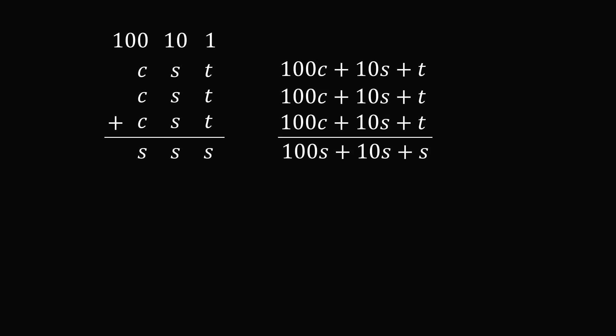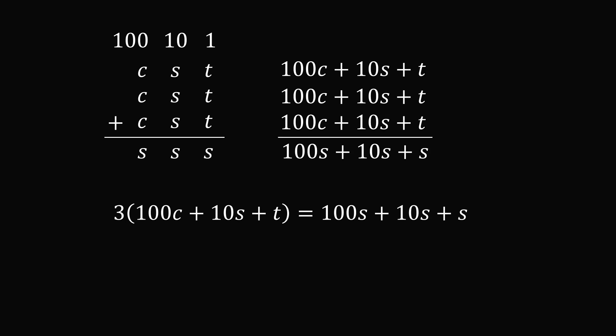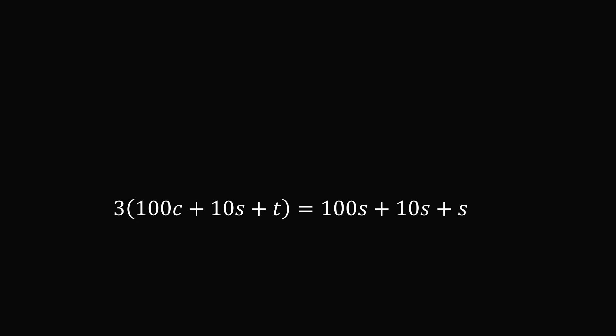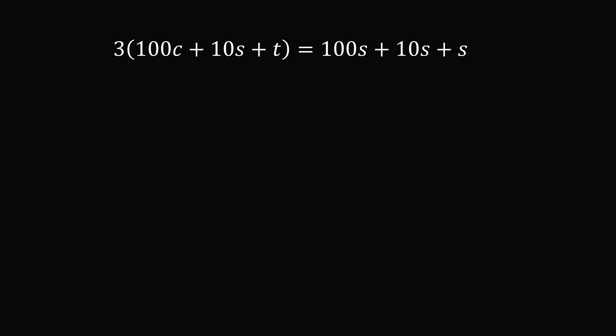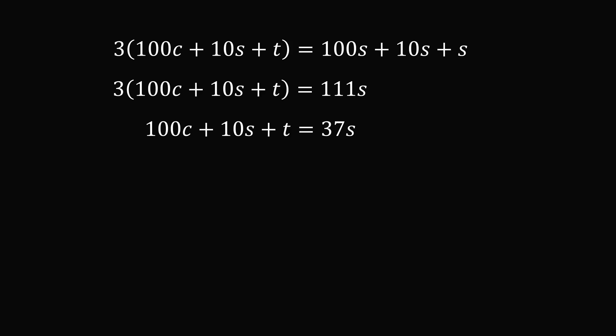Since we have three groups of the number CST, three multiplied by this number equals 100S plus 10S plus S. Now, 100S plus 10S plus S equals 111S. Dividing both sides by 3, we get: 100C plus 10S plus T equals 37S.